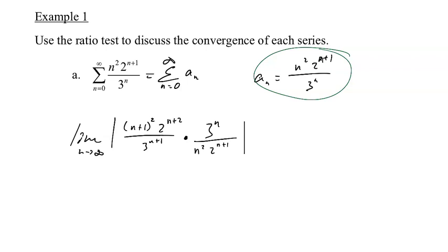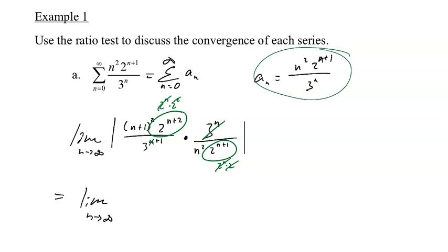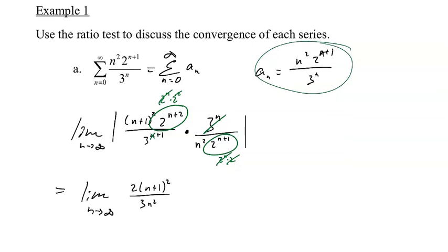Now it's just a matter of simplifying. For the powers of 2: 2^(n+2) = 2^n · 2² and 2^(n+1) = 2^n · 2, so the 2^n terms divide out and we're left with 2 on top. The 3^n terms also divide out, leaving 3 in the denominator. The (n+1)² and n² terms stay, giving us the limit as n approaches infinity of 2(n+1)² / (3n²).